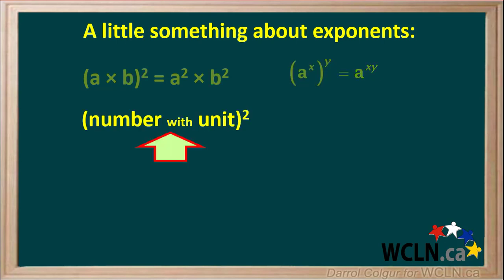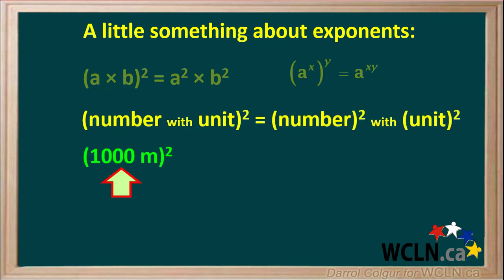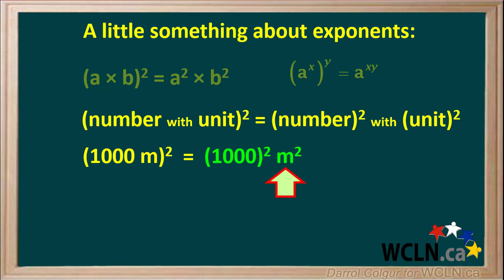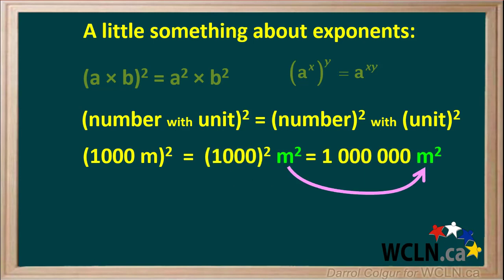Now, if we take a number with a unit and square it, we get the number squared with the unit also squared. For example, let's say we have one thousand meters and we square it. It is equal to one thousand squared meters squared, which is equal to one million meters squared.